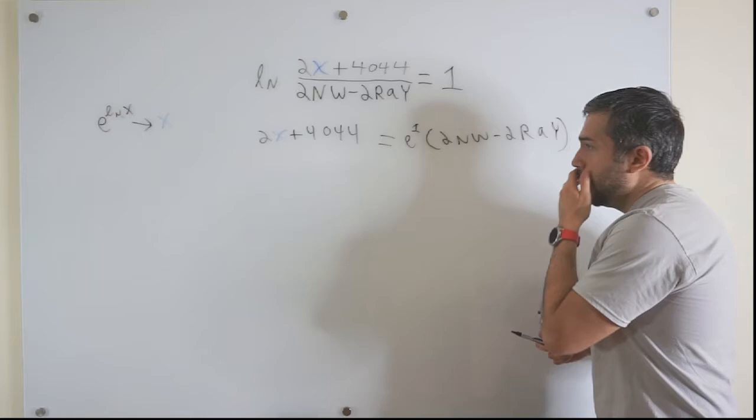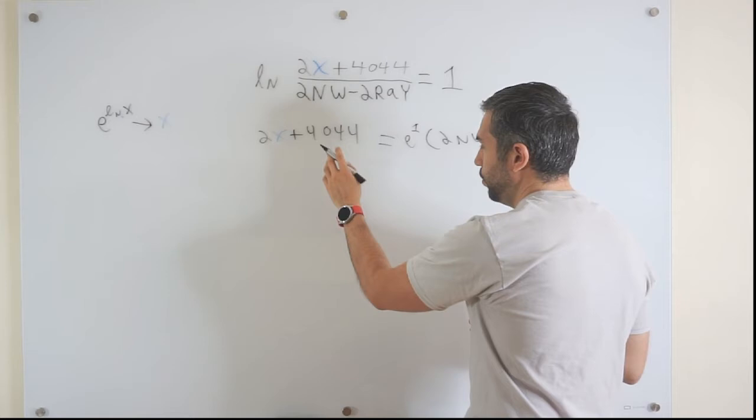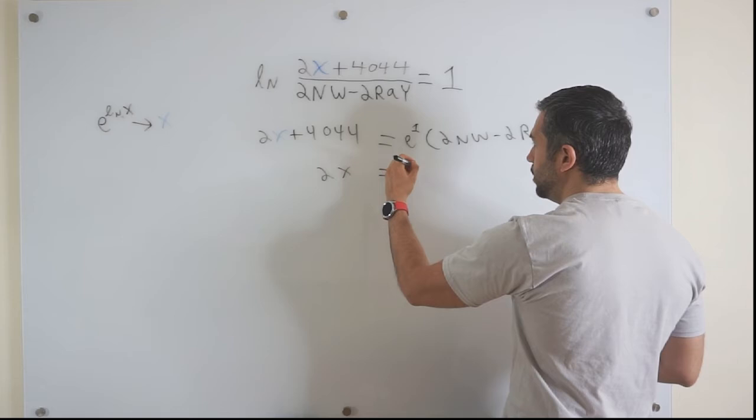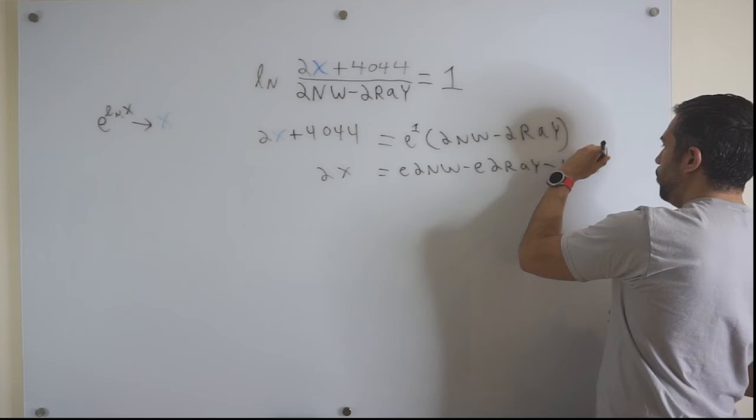Now what we're going to do, we're going to distribute this e on both terms. At the same time, we're going to subtract by 4044. So we're going to get 2x, and I'm going to get rid of this to the power of 1 because it's redundant. So we got e times 3nw minus e times 3ray minus 4044.